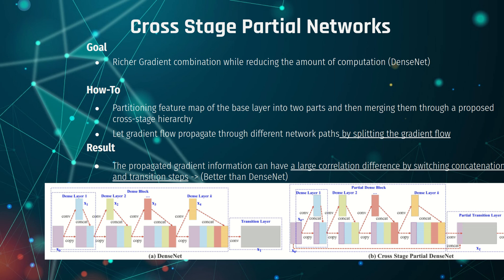So the cross-stage partial network — let's jump right into what that is. The goal is to have richer gradient combinations while reducing the amount of computation. On one hand, you want to be rich in your gradient combinations, which means you can enhance your learning capability — exactly what the title of CSPNet is talking about. On the other hand, you're trying to reduce the amount of computations. That is exactly what CSPNet tries to optimize compared to DenseNet, which is why I recommend checking the DenseNet video first.